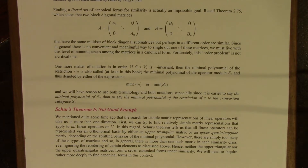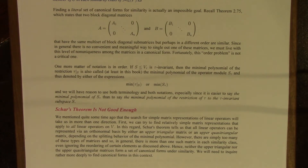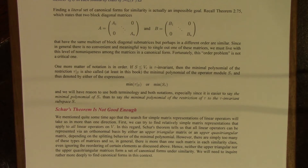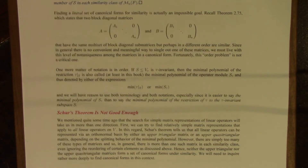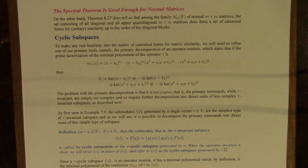Schur's theorem, which is extremely powerful — and as I mentioned before, some experts say it's the most important theorem in all of matrix theory — is not powerful enough to provide a set of canonical forms. Schur's theorem tells us that all linear operators can be represented via an orthonormal basis by either an upper triangular matrix or an upper quasi-triangular matrix, depending on whether the minimal polynomial splits or not. But there are just too many of these types of matrices, so they're not going to form sets of canonical forms.